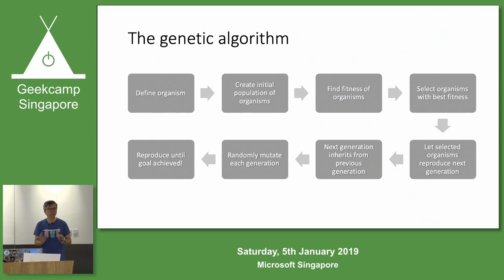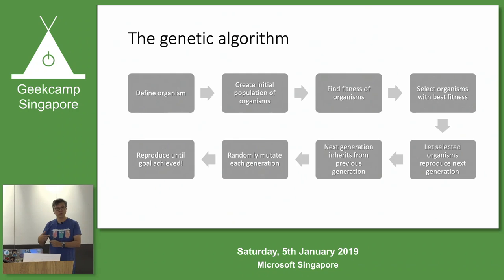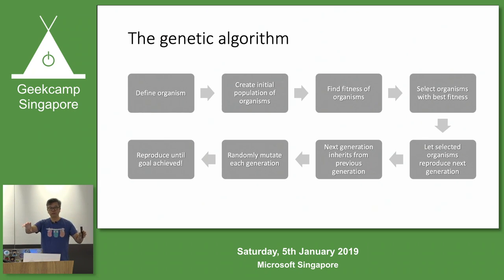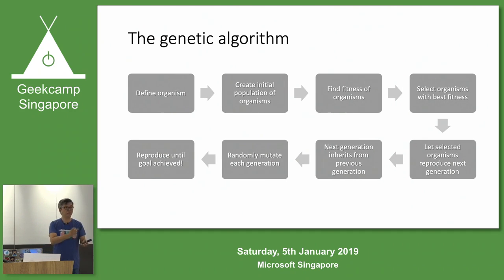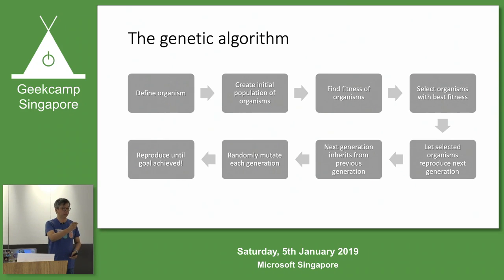Let me get into the actual algorithm itself. It's a pretty simple algorithm that follows very closely to natural selection. First, we define an organism. Then we create the population of organisms. We find the fitness of the existing organisms — this is our baseline. We select the organisms with the best fitness, let them reproduce to the next generation, and that next generation will have the properties of the previous generation but not exactly. Finally, we randomly mutate some of the organisms in the next generation, and then this cycle goes round and round until the goal is achieved.